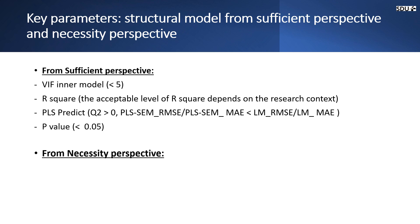And then to evaluate the structural model relationships from a necessity perspective, first we need to check the accuracy of the ceiling line. The ceiling line accuracy represents the number of observations that are either on or below the ceiling line divided by a total number of observations multiplied by 100.